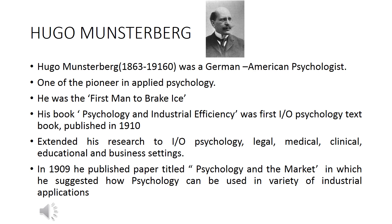Hugo Munsterberg was a German-American psychologist known as the father of industrial psychology, who focused on abilities and work performance. He is one of the pioneers in applied psychology and was the first man to break ice in industry. His book, Psychology and Industrial Efficiency, was the first industrial and organizational psychology textbook, published in 1910. He extended his research to legal, medical, clinical, educational, and business settings. In 1909, he published a paper titled Psychology and the Market, suggesting how psychology can be used in advertising, employee motivation, decision making, and many more. He is also well known for his contribution to forensic psychology.